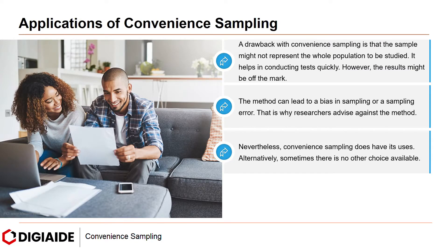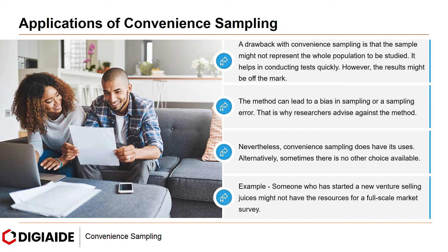Convenience Sampling does have its uses. Sometimes there is no other choice available. For example, someone who has started a new venture selling juices might not have the resources for a full-scale market survey. A smaller business will likely get the friends and family of employees to take a survey and ask what they like.